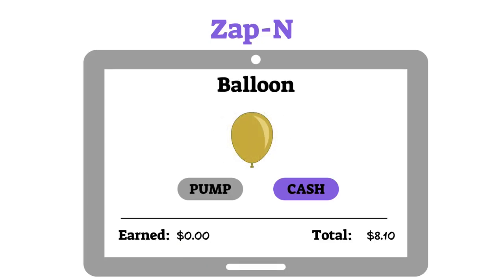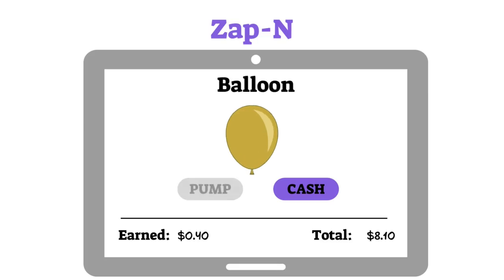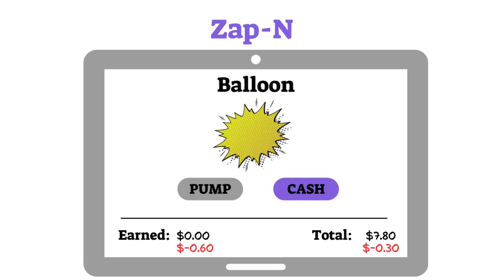In the second session of the game, the rules are similar, but with two differences. One, the money you earn with every pump is doubled, and two, if the balloon pops, you will be fined with half of what you've earned.